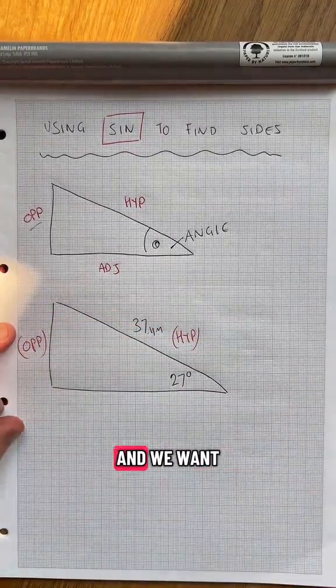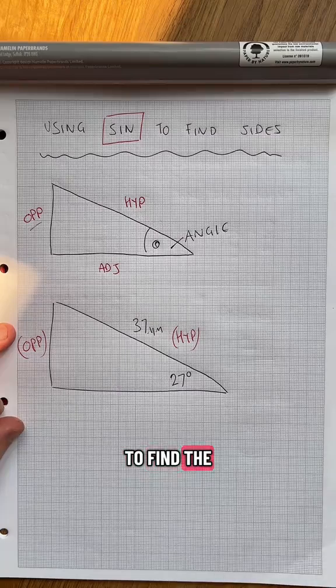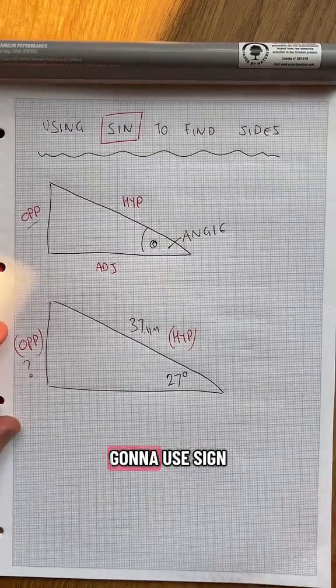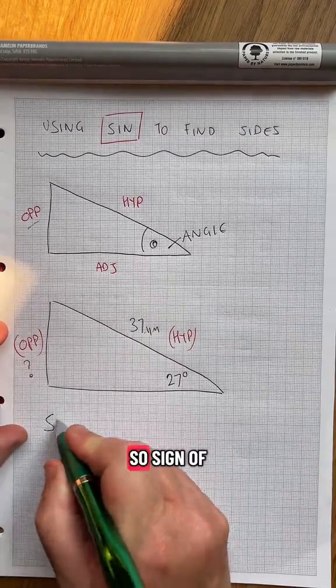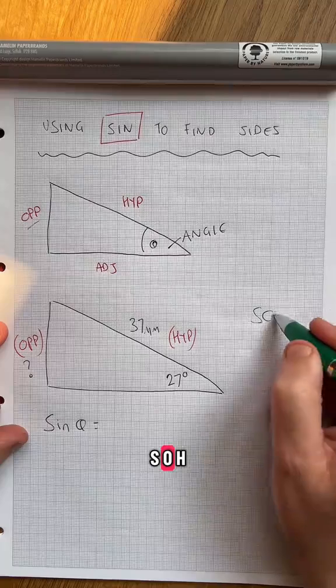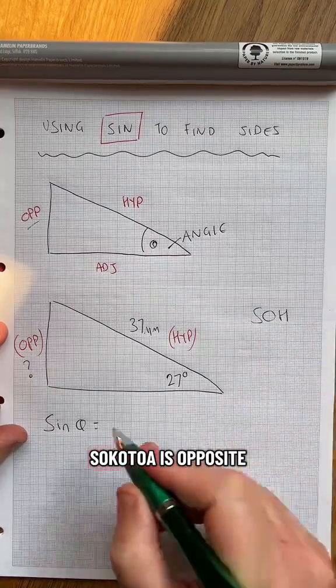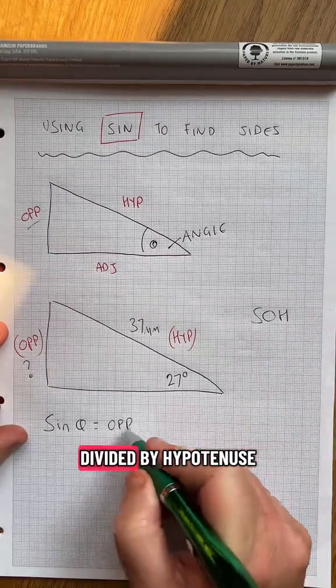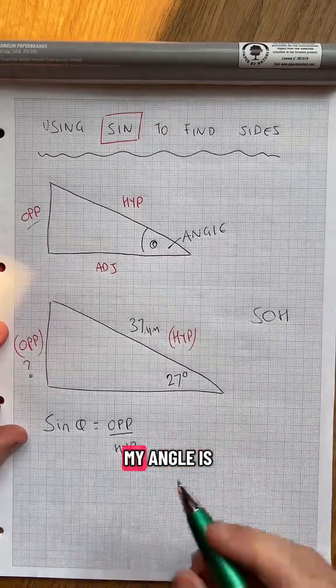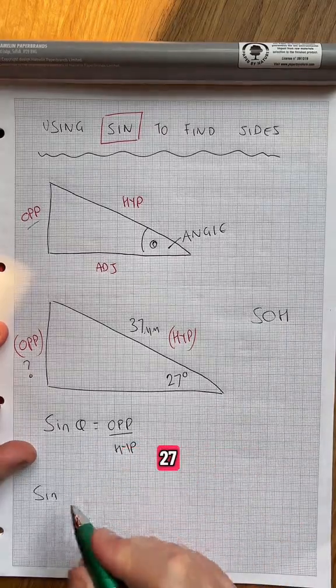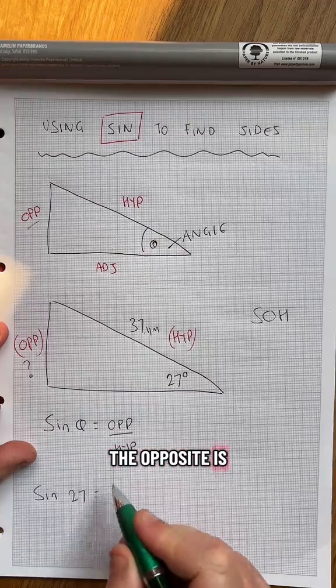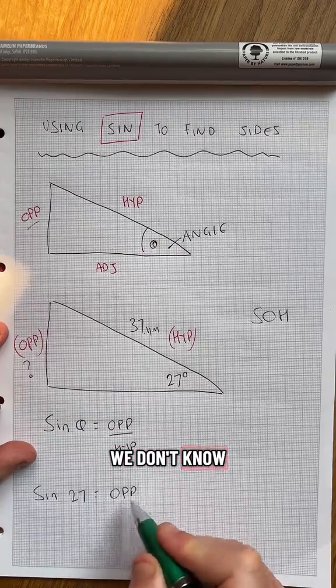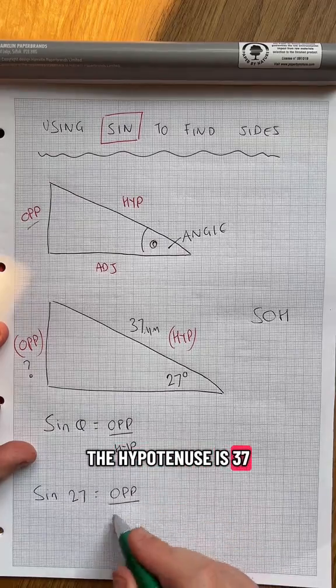And we want to find the opposite side. So I'm going to use sine. Sine of the angle, SOH, look, SOHCAHTOA, is opposite divided by hypotenuse. My angle is 27, the opposite is we don't know, hypotenuse is 37.